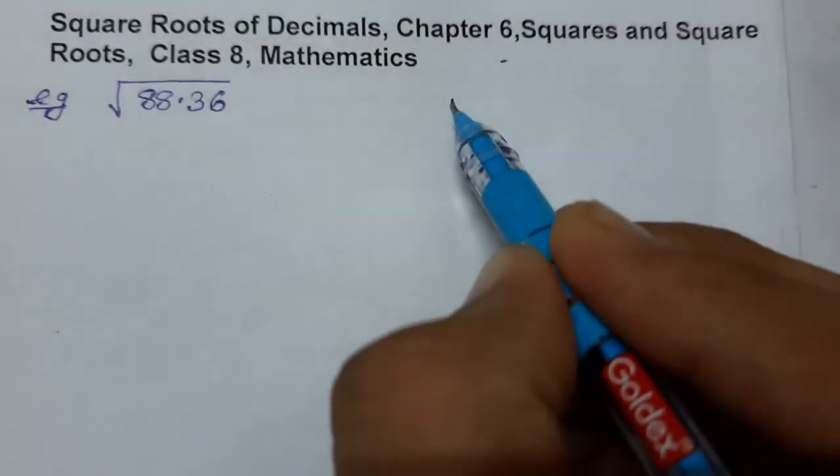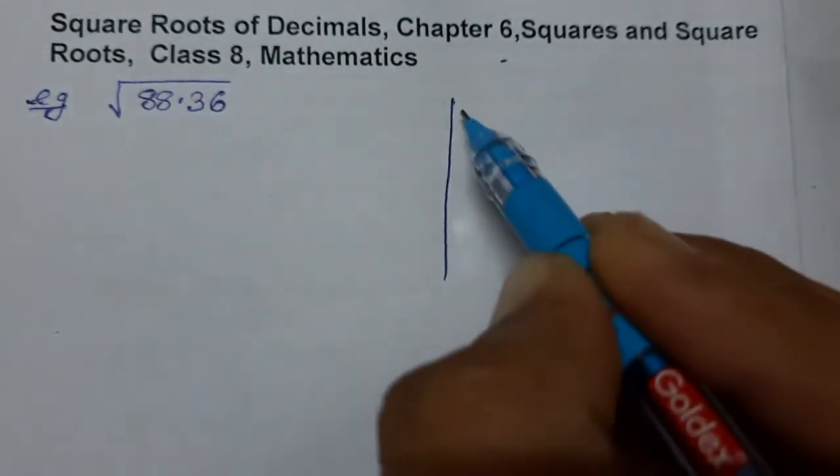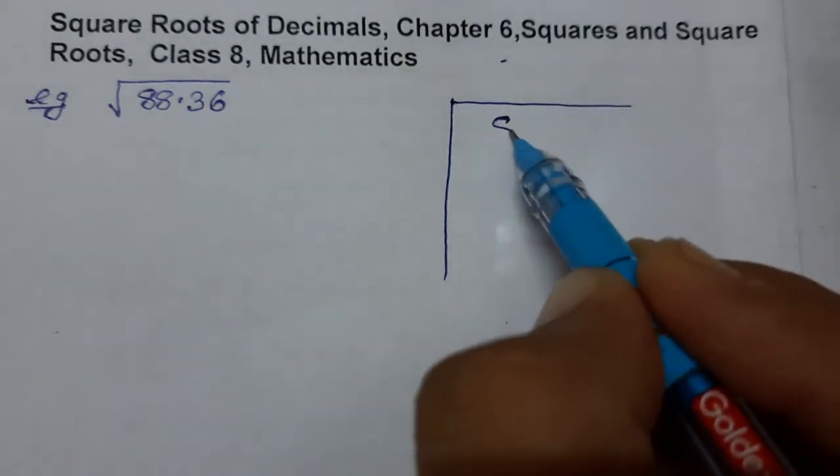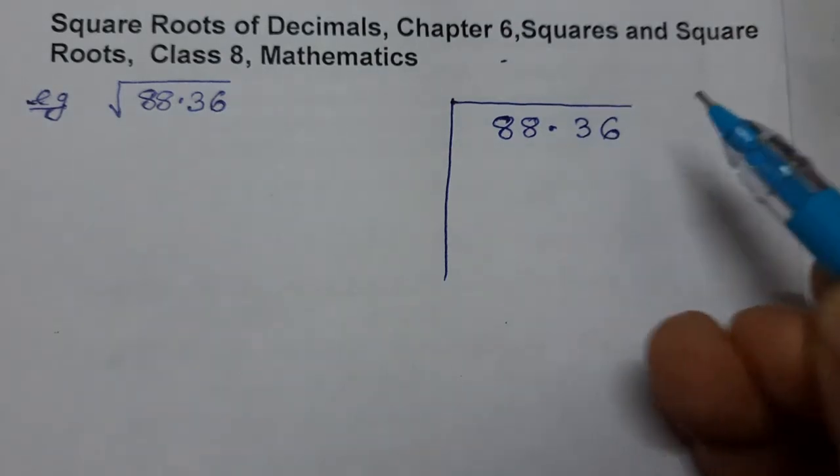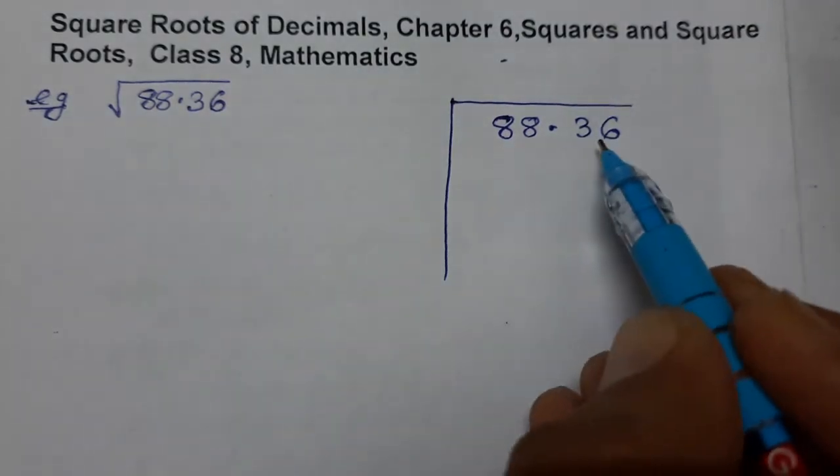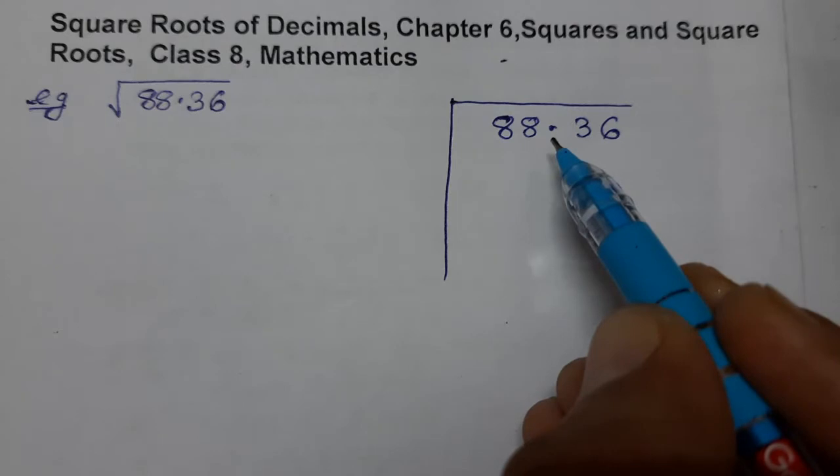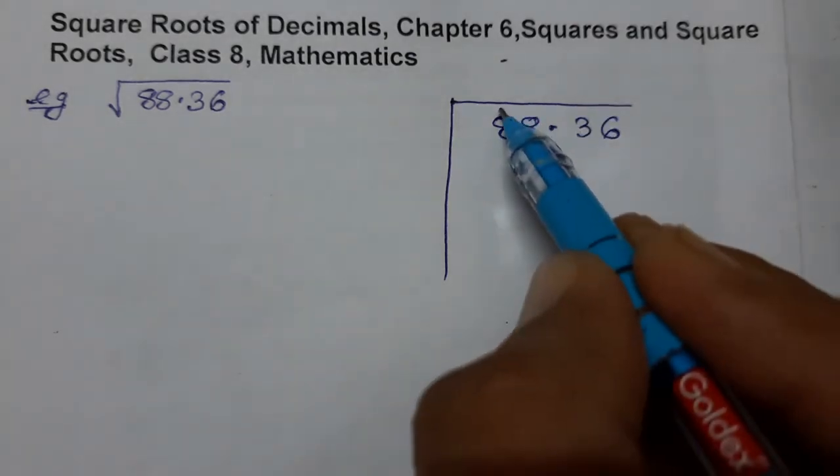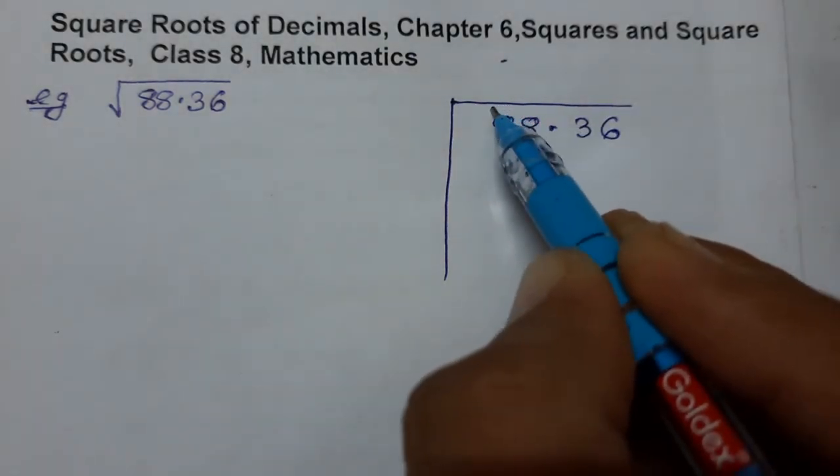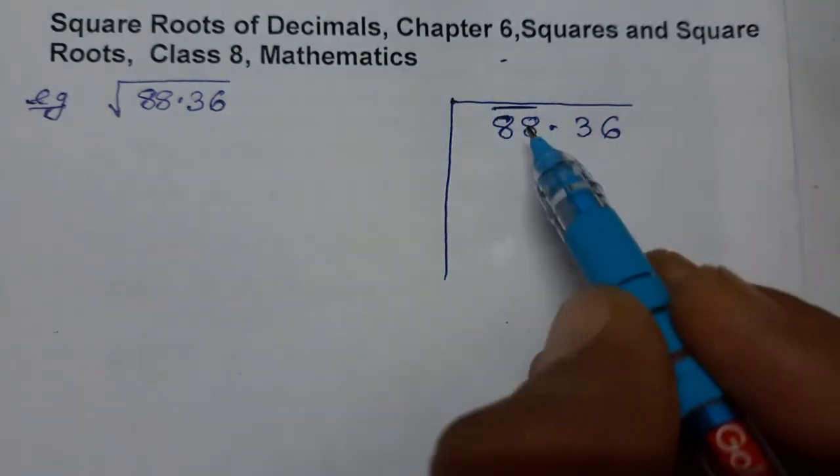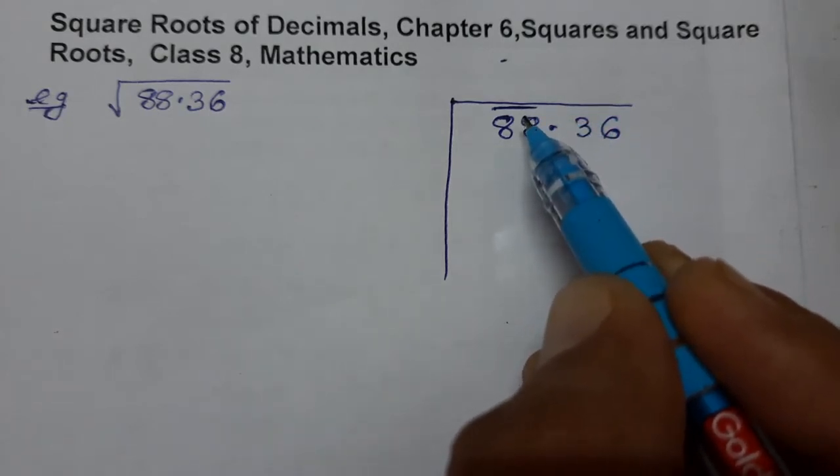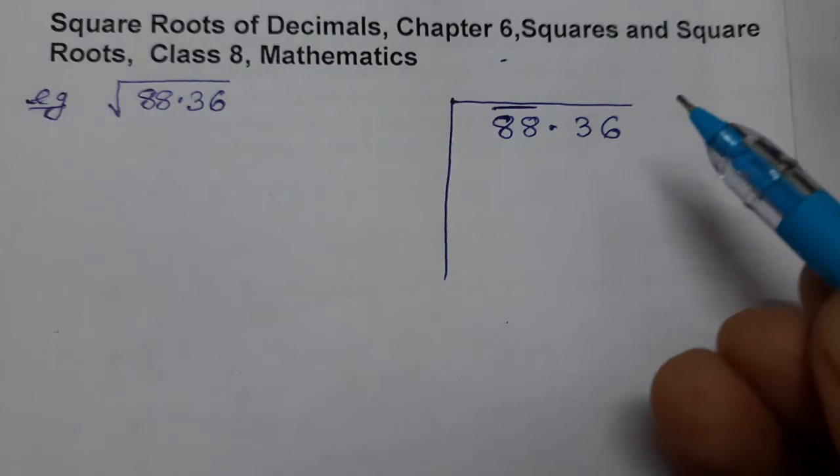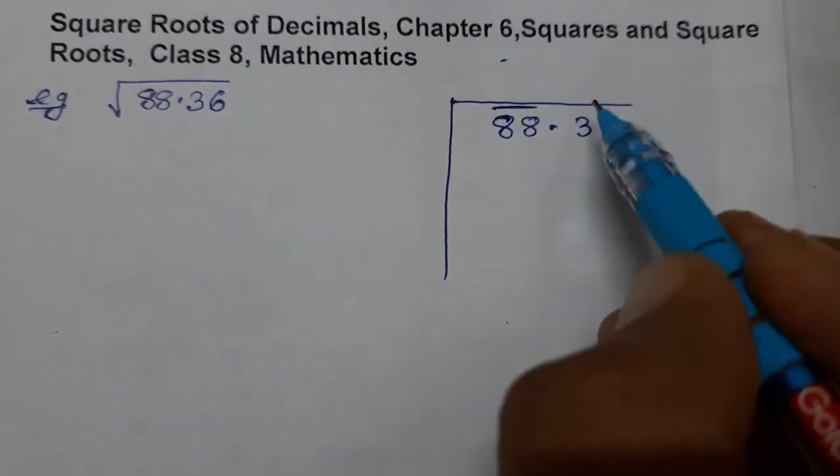Write inside 88.36. Now to find the square root of a decimal number, we put bars on the integral part, that is 88.